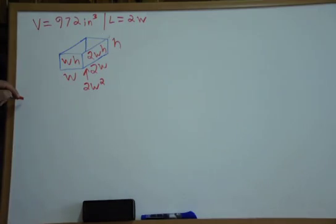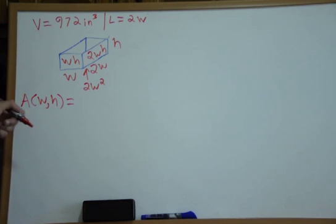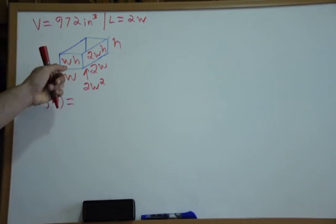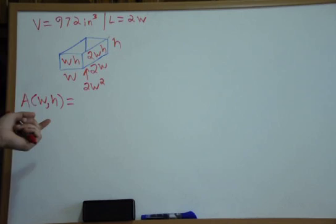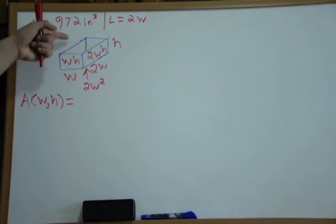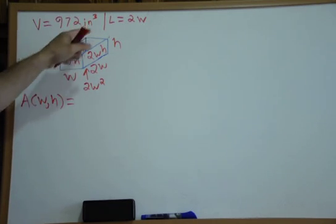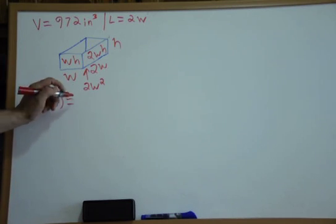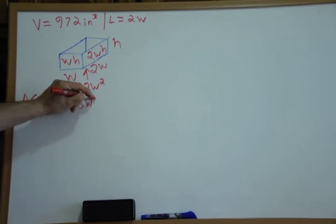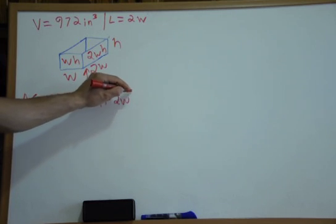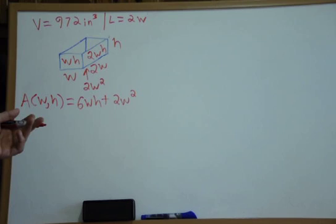Now we create our function for the surface area. The area of one side face is W times H, and the back is also WH, so that's 2WH. The two longer side faces are each 2WH, giving 4WH total. So combined that's 6WH, plus the bottom which is W times 2W, which is 2W squared.